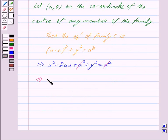this further implies x² + y² = 2ax. We mark this as equation 1, and here we have a is an arbitrary constant.